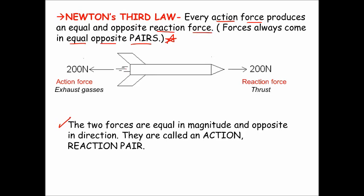The force that pushes the exhaust gases out of the rocket — in this case, 200 Newtons of force — is referred to as the action force. It's the force created by the exhaust gases. The exhaust gases are forced out the back of the rocket, and they in turn push on the inside of the rocket motor and force the rocket forward with a force that is equal in magnitude: 200 Newtons.